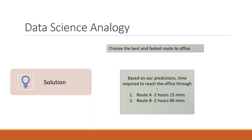So the total time to reach office through Route A is 2 hours 15 minutes, whereas Route B is 2 hours. To make the decision: I will travel through Route B — even though it is 6 km farther, I can reach office 15 minutes earlier. That is how we make a decision using data science.